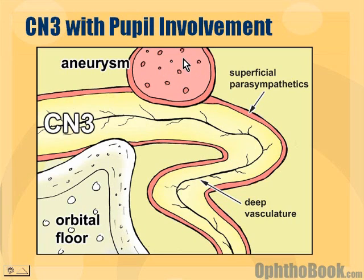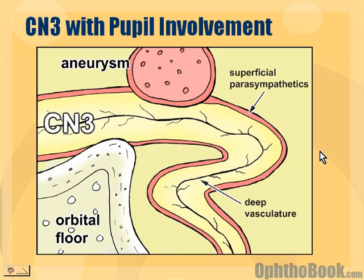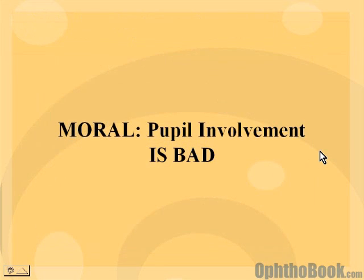If you have an aneurysm or tumor pushing on cranial nerve 3, it very often will affect the pupil — the pupil will be involved. Diabetes or hypertension, hitting deep inside the nerve, will sometimes spare the parasympathetics. So pupil involvement is crucial to document if you have a third nerve palsy. The moral of the story: pupil involvement is bad. Realistically, if you have a third nerve palsy of any sort, it probably makes sense to image because it's something you do not want to miss.